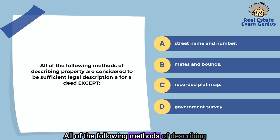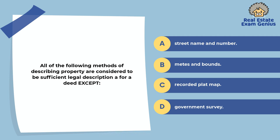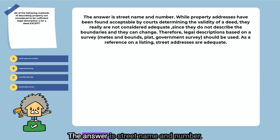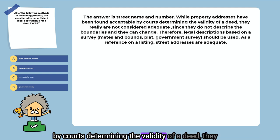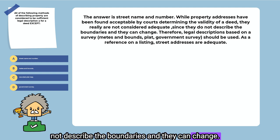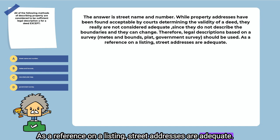All of the following methods of describing property are considered to be sufficient legal description for a deed except: street name and number. The answer is street name and number. While property addresses have been found acceptable by courts determining the validity of a deed, they are not considered adequate since they do not describe the boundaries and they can change. Legal descriptions based on a survey should be used. As a reference on a listing, street addresses are adequate.